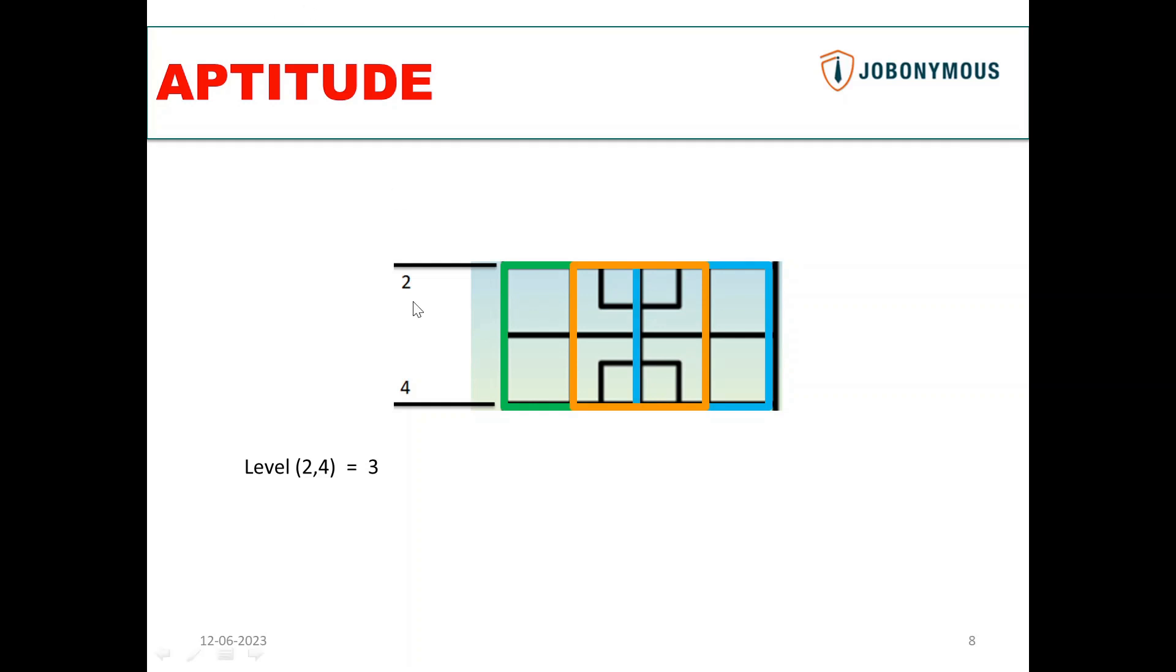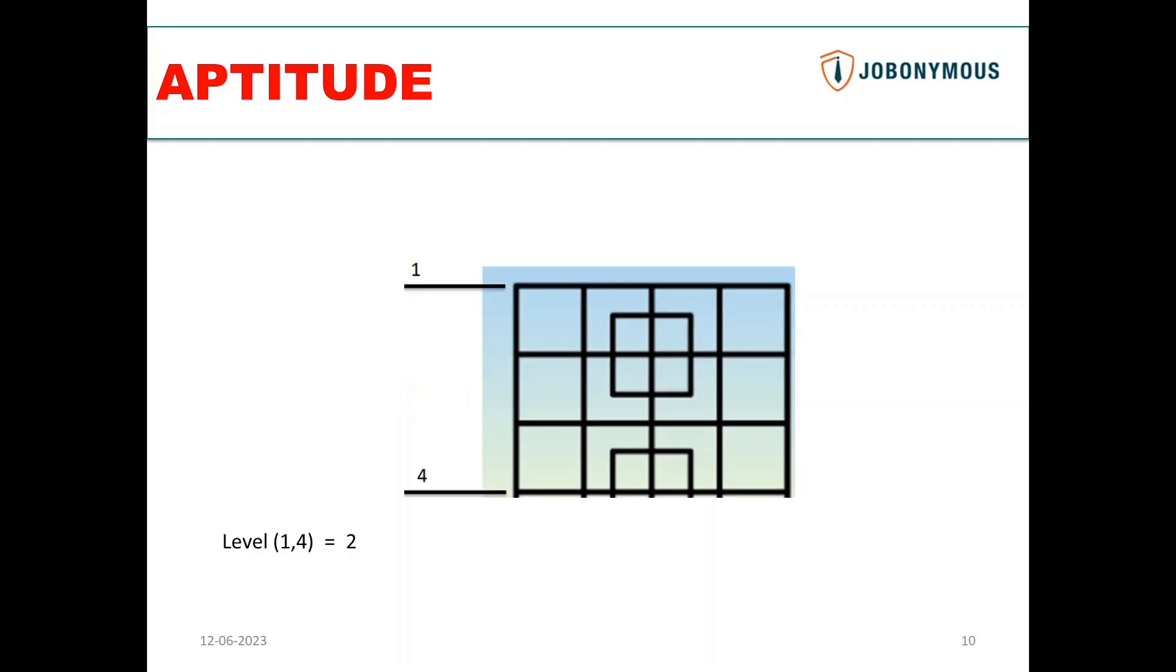But here you will not count these two because these two are rectangles, not squares. Then between three and five: one, two, three, four. So one such combination is done. Then the other one can be combination one-four.